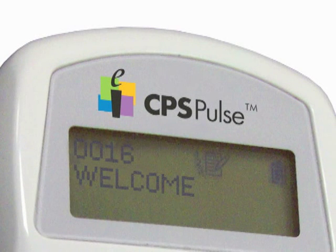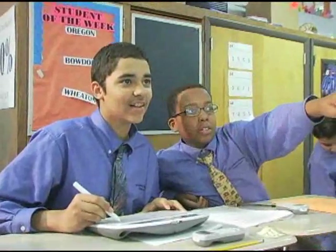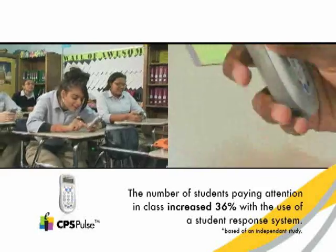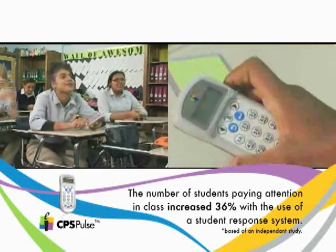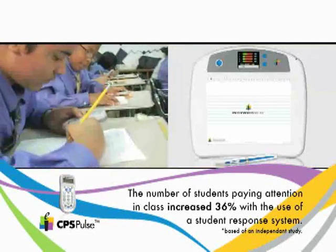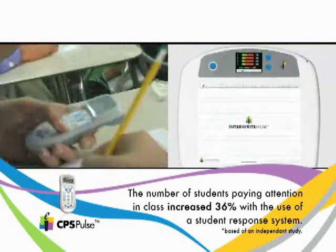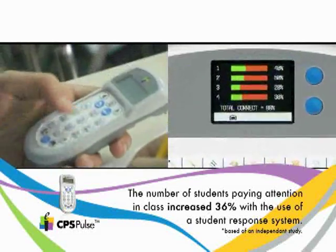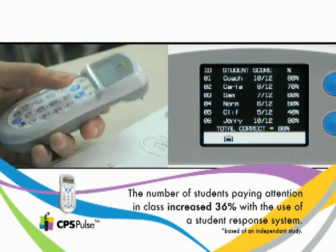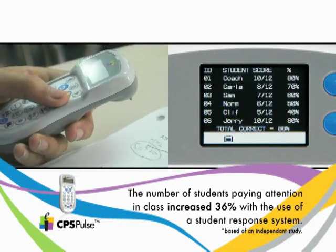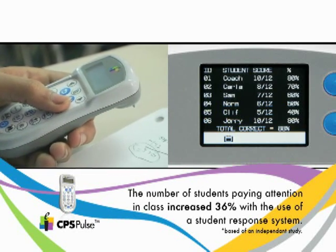One of the biggest advantages with the CPS Pulse has been that I'm now getting the data in real time. I can be more proactive with what I'm doing rather than reactive. In the past I've had to wait for an exit quiz or test results to know if I can move forward with material, but now I'll find out during the class period if students are under-mastering the material and we can make those corrections during class.